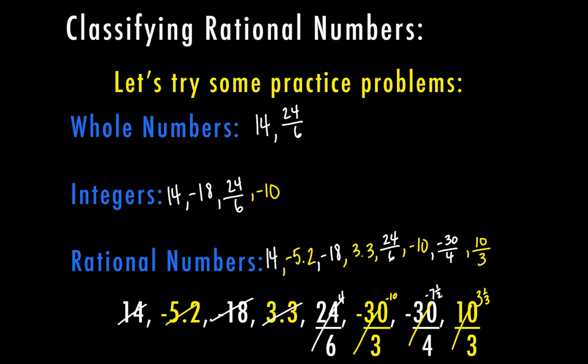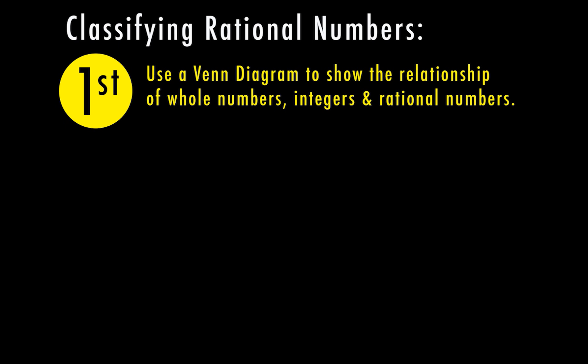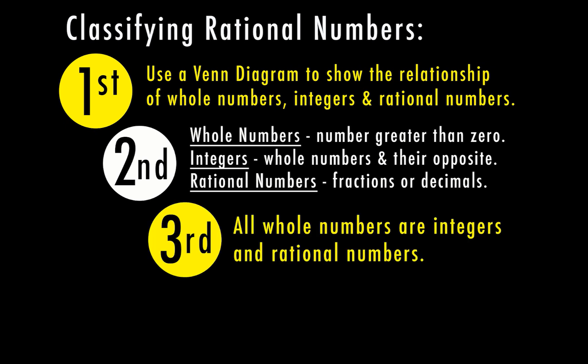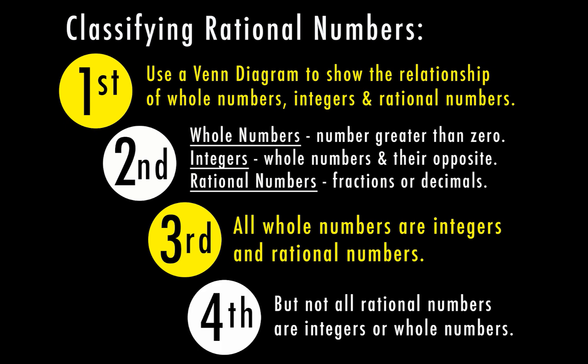Rational numbers actually covers most numbers you've learned up to this point. Let's recap our steps: First, use a Venn diagram to show the relationship of whole numbers, integers, and rational numbers. Second, review the definitions — a whole number is greater than zero, an integer is a whole number and its opposite, and rational numbers are typically fractions or decimals. Third, all whole numbers are also integers and rational numbers. Fourth, not all rational numbers are integers or whole numbers.